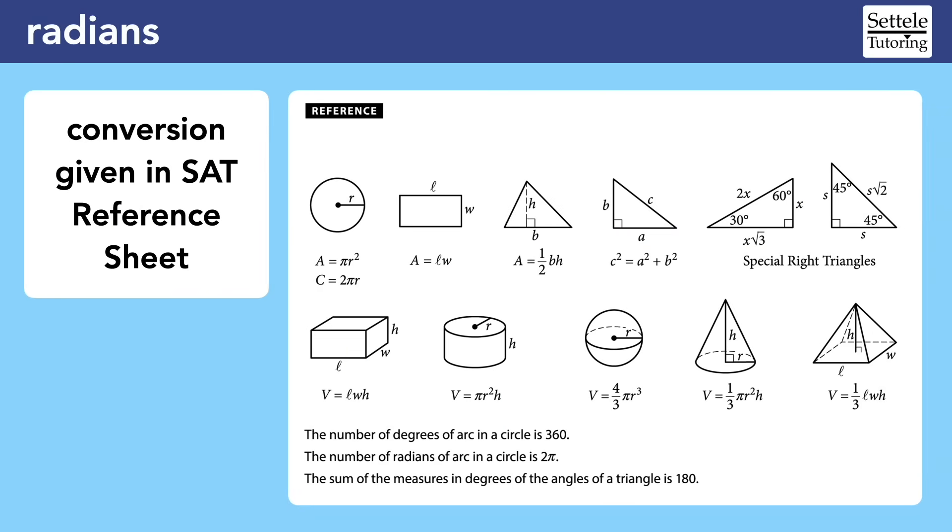Luckily for us, the SAT gives us the most important conversion. It's at the bottom of the SAT reference sheet, which is given to you on every SAT math question. The number of degrees of arc in a circle is 360, and the number of radians of arc in a circle is 2π. To put it simply, 360 degrees equals 2π radians.